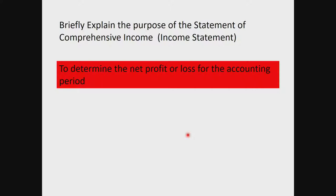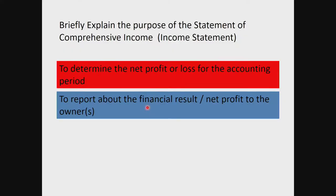A net profit occurs when income exceeds expenses, and a loss occurs when expenses exceed income. Another possible answer is that the statement reports the financial result — the net profit or net loss — to the owners. The statement of comprehensive income shows how the financial result was calculated.